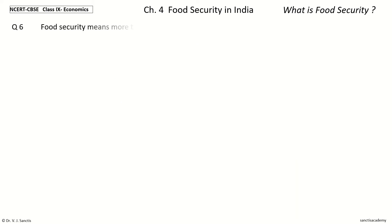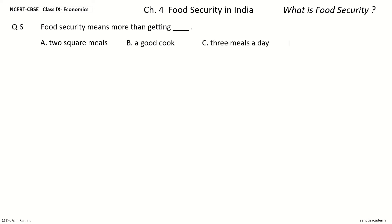Question 6: Food security means more than getting dash. The options are: two square meals, a good cook, three meals a day, a PDS in place. Your time to choose. And the answer is two square meals. So food security means more than getting two square meals.